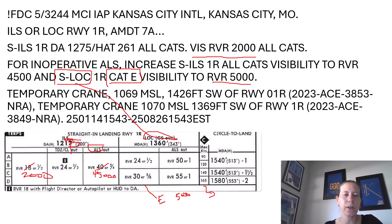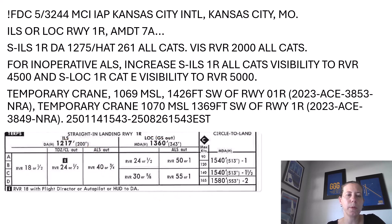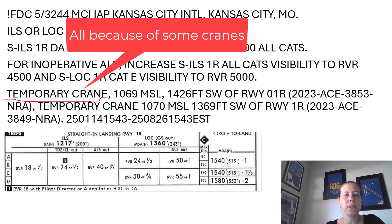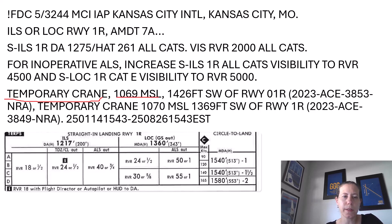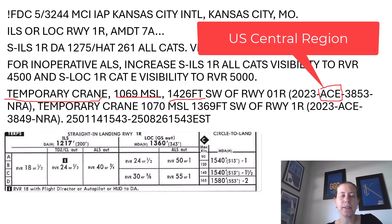That was a lot of changes to monkey around with on my chart. Why is this going on? The next part of the NOTAM tells me why: they have put up a temporary crane. Here's its location, here's how tall it is — 1,069 feet MSL — and it is 1,426 feet southwest of Runway 1 Right. That code indicates the central region of the United States.